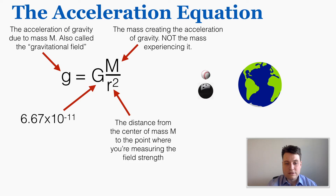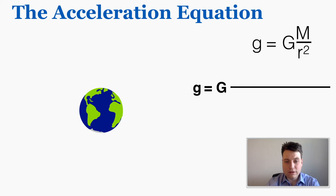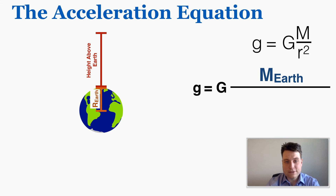r is the distance from the center of mass M to the point where you're measuring the field strength — also called the gravitational field strength at that point. Any two objects, regardless of their mass, will experience the same acceleration of gravity at the same distance from the center of the object. For objects a certain height above earth, r equals the radius of earth plus that height.